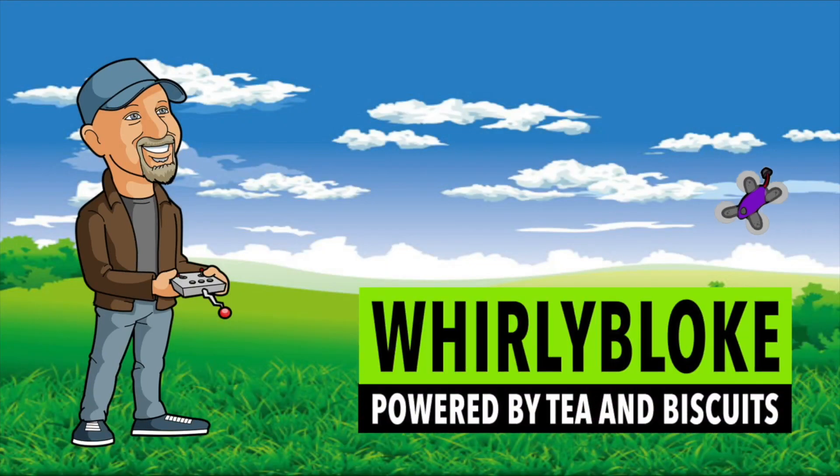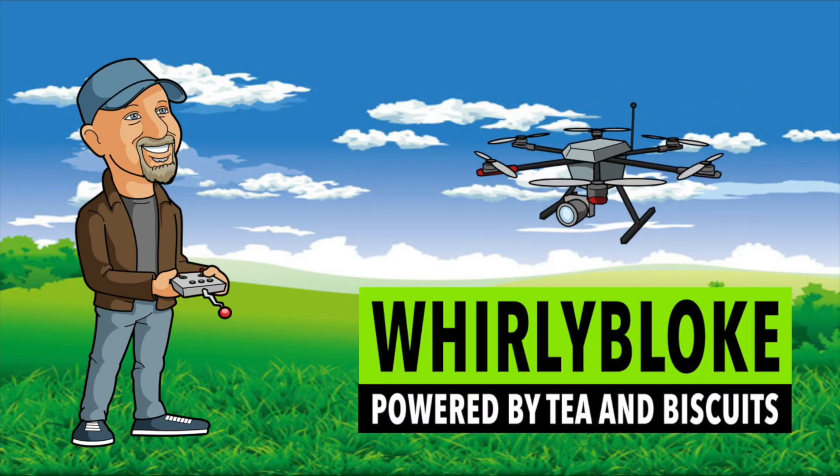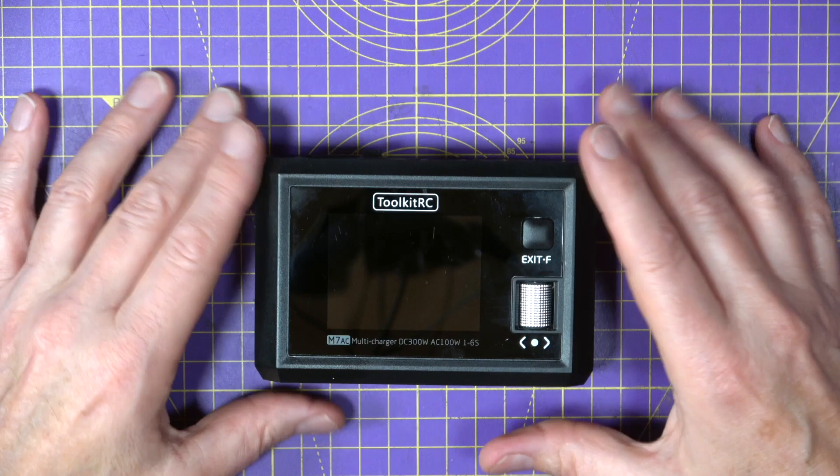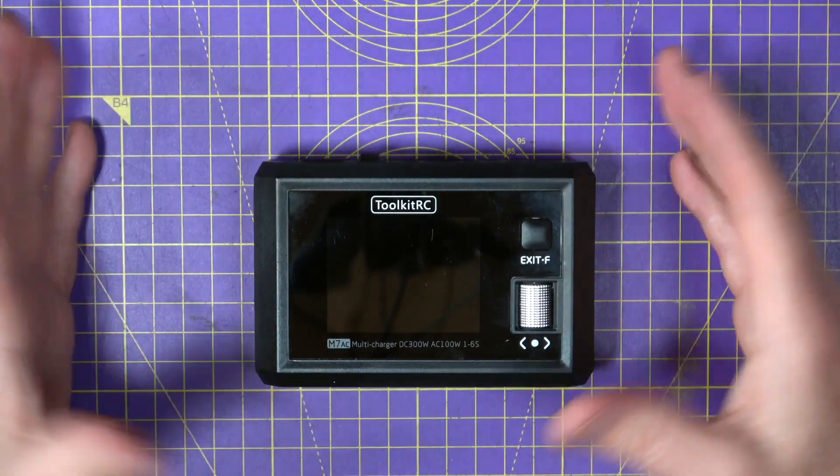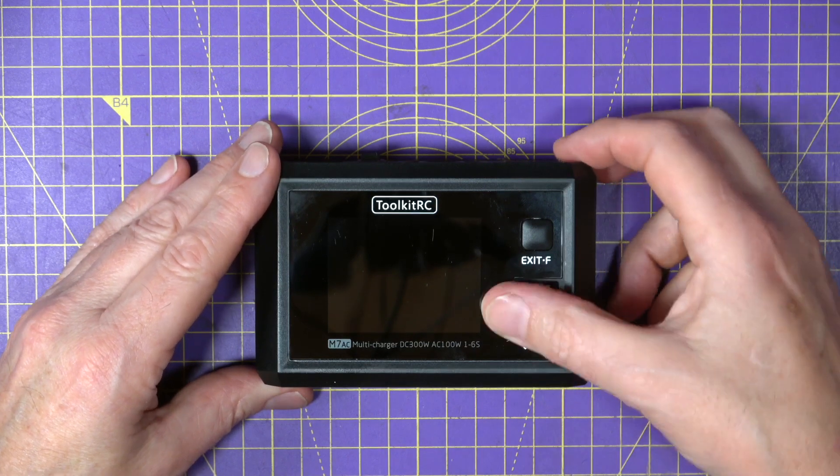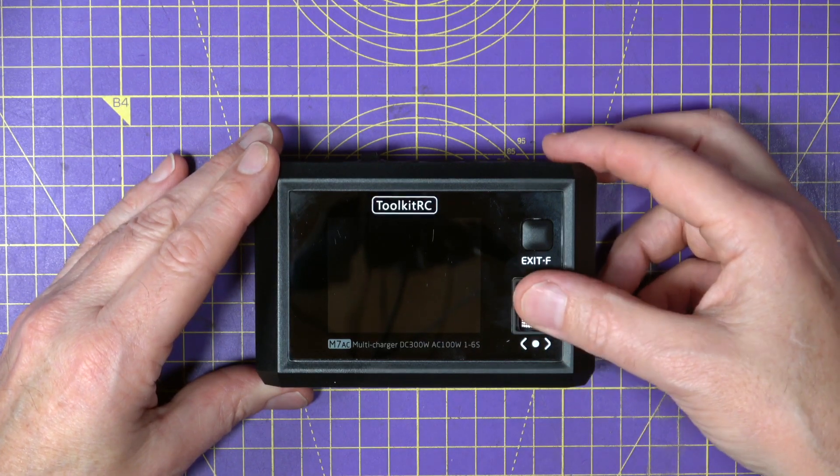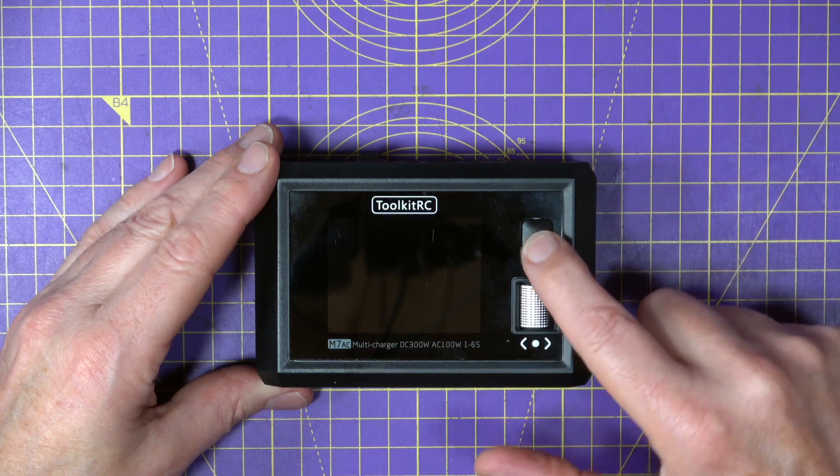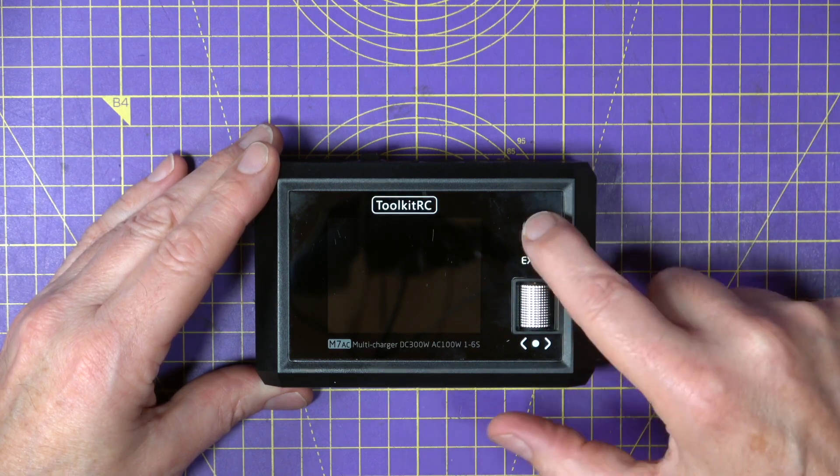Hello and welcome to the Whirly channel. This is YouTube. You know what to do. This charger follows the familiar style Toolkit RC have used on all their recent chargers. There's this 2.4 inch IPS display with the scroll wheel here for selecting things and you just click it to select and there's this back or escape button here.